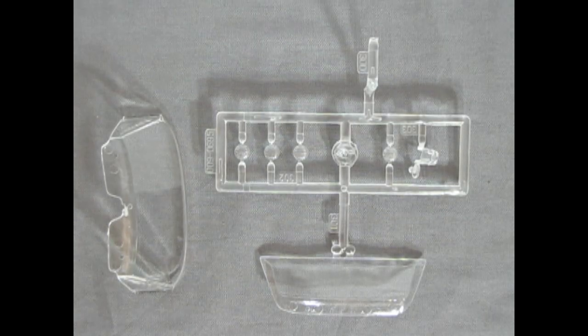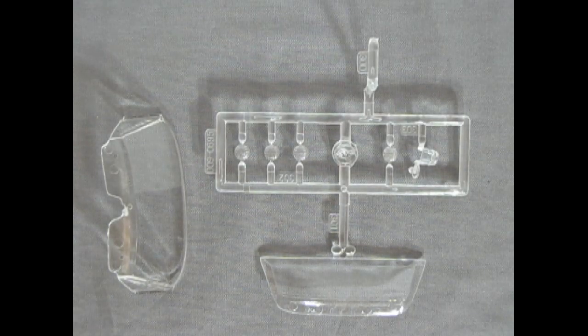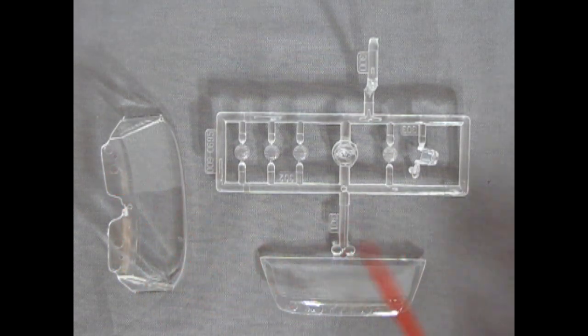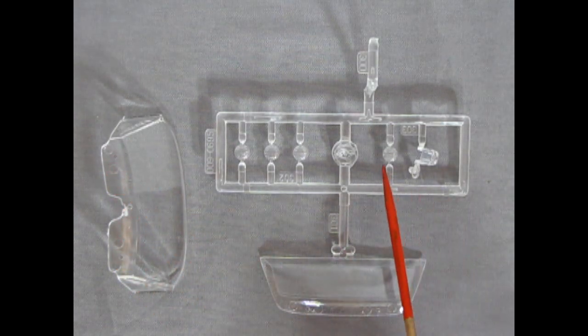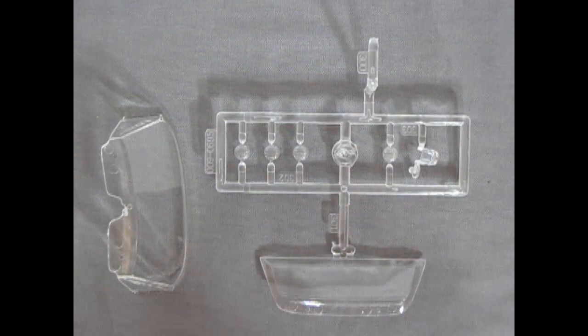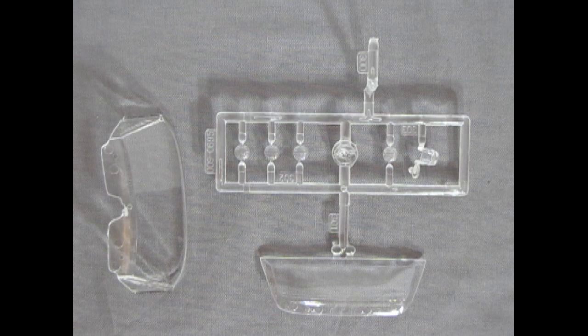Next up, we've got the glass components. There's not too much on here. There is the front windshield, and it does look like they tried to mold in some little sun visors up here. The rear window, four headlights, and the windshield washer bottle. So again, very nice detail on these parts.